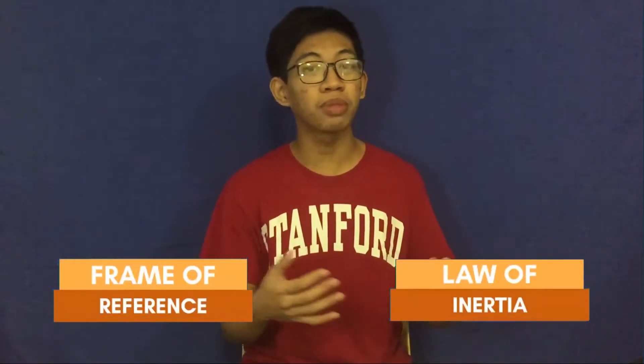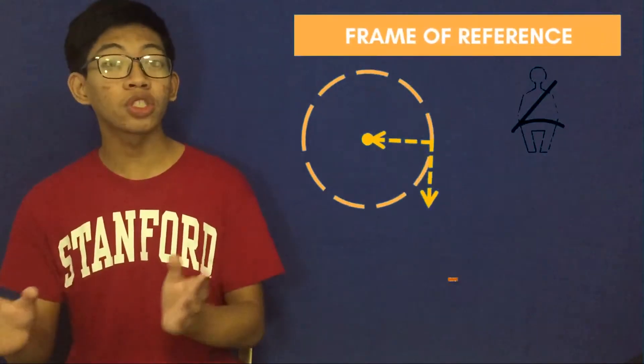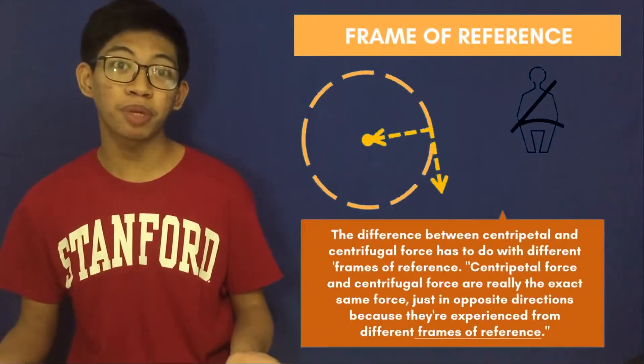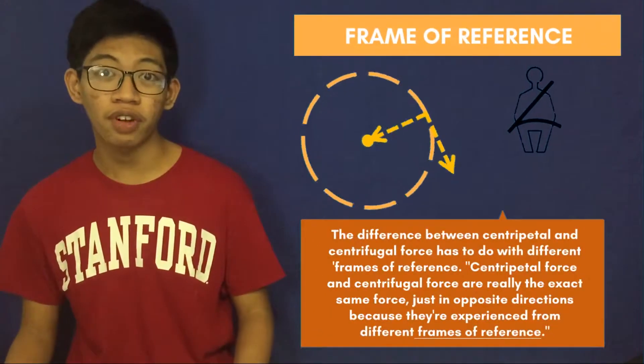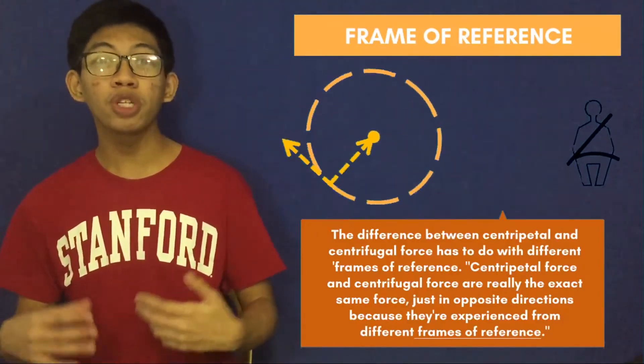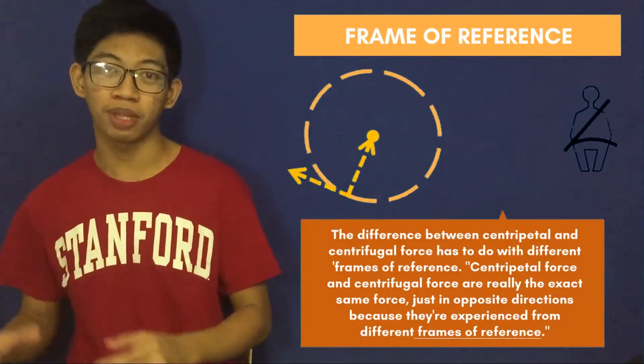That is where frame of reference with the help of law of inertia comes in. If you're the object who's experiencing the uniform circular motion, you will have a different perspective, a different frame of reference, which causes you to feel that apparent force, which seems to be pushing you away from the circle.